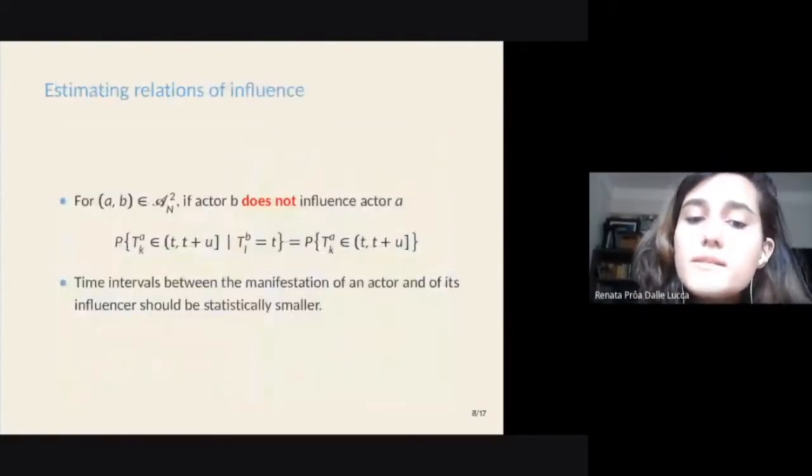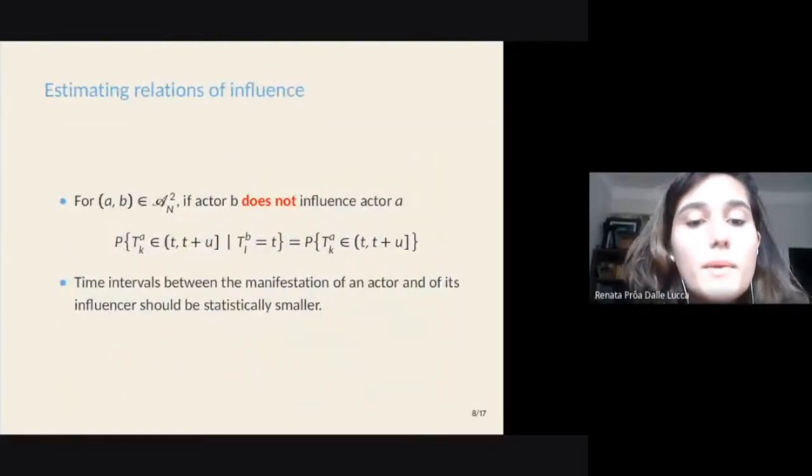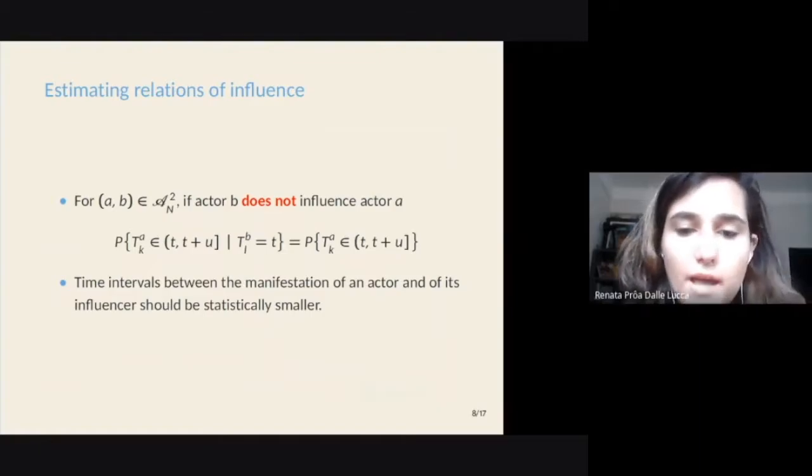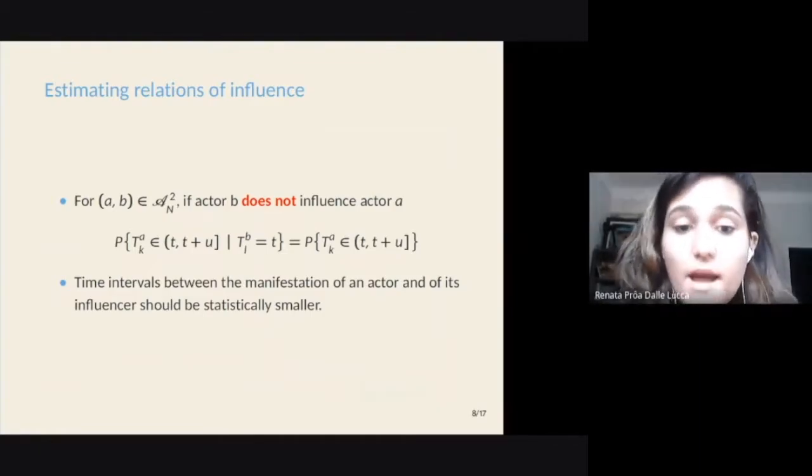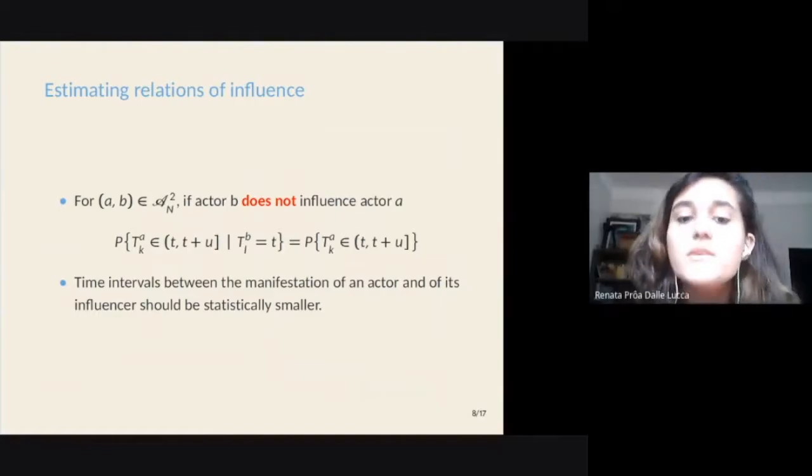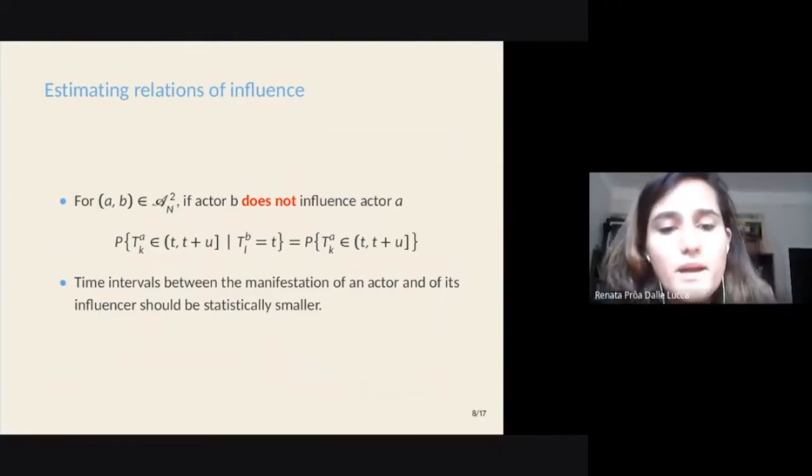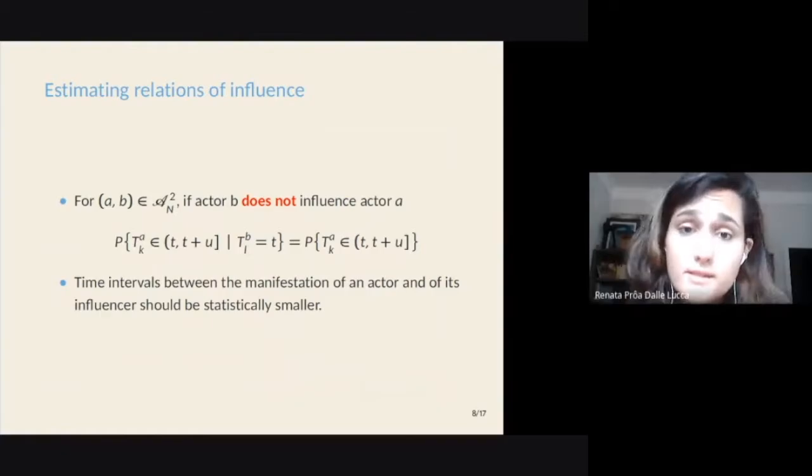In order to estimate the relations of influence from the sequence of manifestations, we may notice that for any pair of actors A and B, if actor B does not influence actor A, then actor A's sequence of manifestations does not depend on actor B's manifestations. In this concern, we may assume the intuitive fact that the time intervals between the manifestations of an actor and another should be statistically smaller if the first one influences the second.